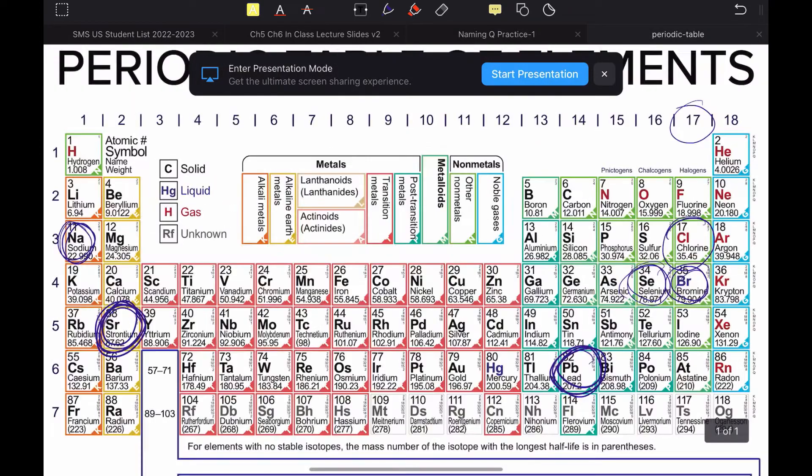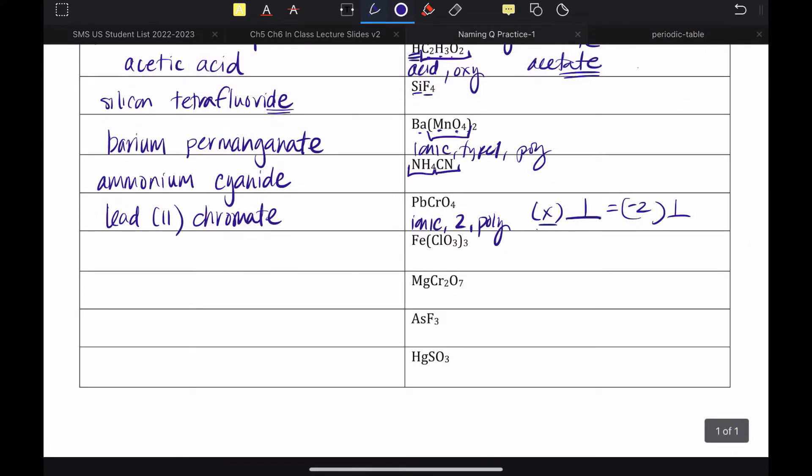Next up, iron. And we'd go find iron and be like, that one's also a type 2. So, again, ionic, type 2, has a poly. And I know that because there are so many elements in here. More than two elements, anyway. So, I would put an X. I have one of them. Chlorate has a charge of minus 1. And there are three of them, which means X must be 3, which means this would be iron(III) chlorate.